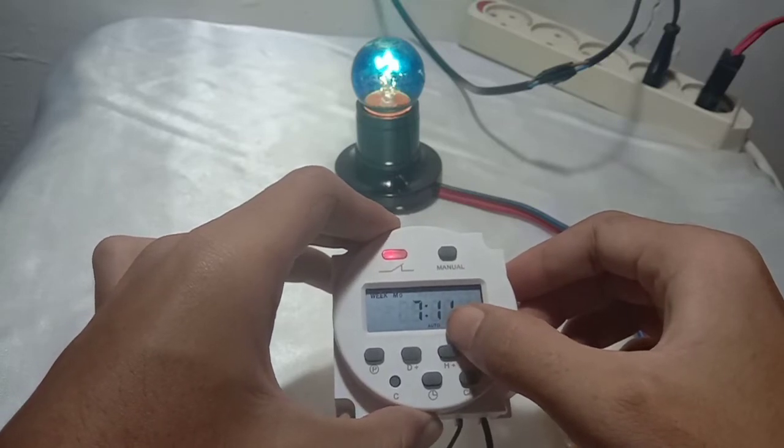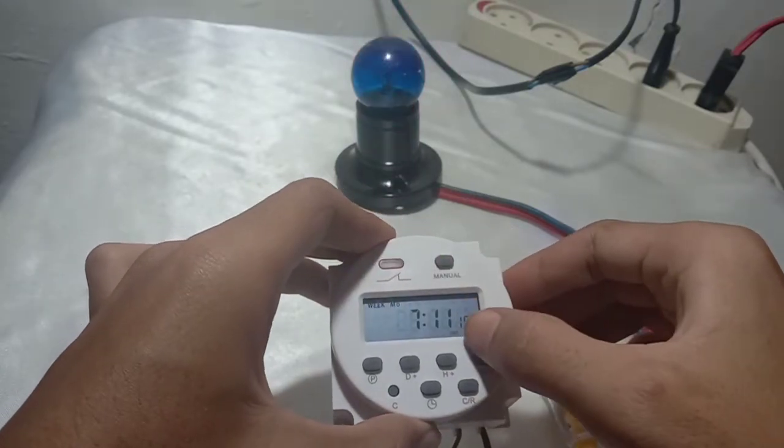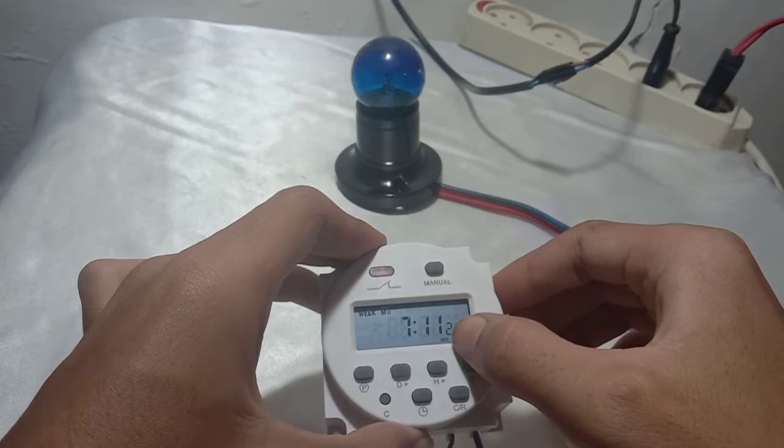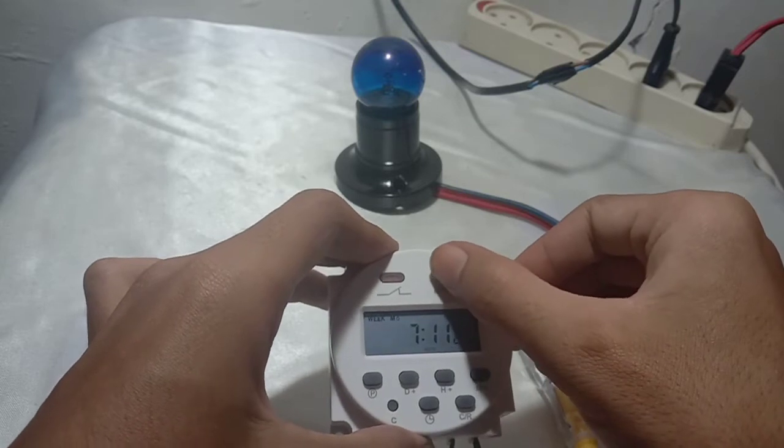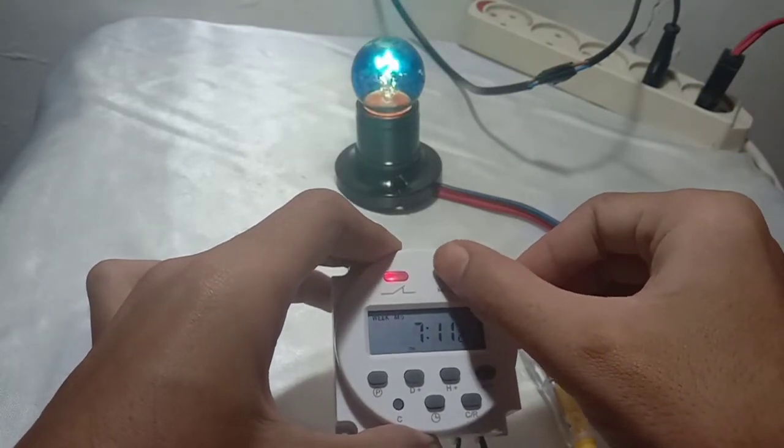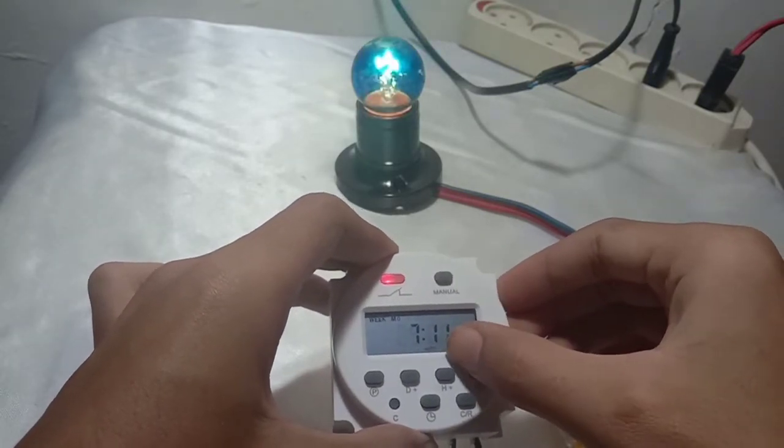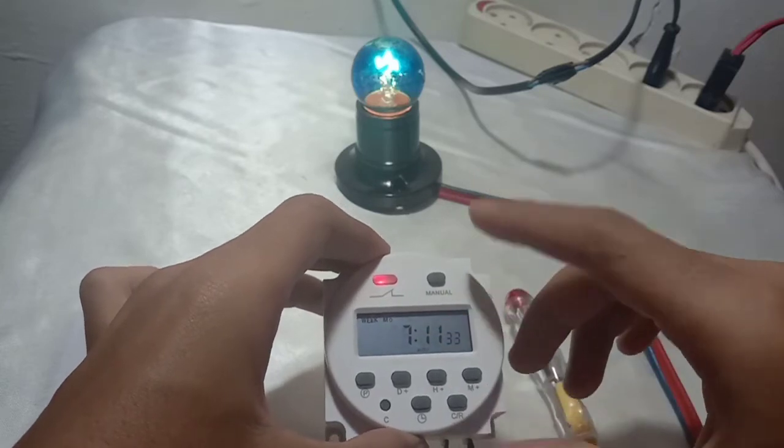Then if I press manual for the second time, it will go to auto. And then if I press manual for the third time, it will go to off and the lamp will be off. You can see.